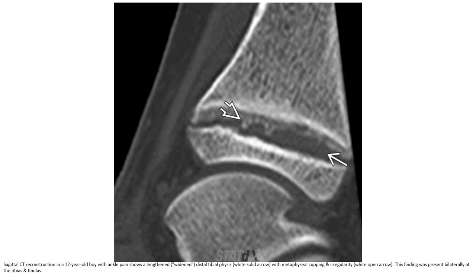Sagittal CT reconstruction in a 12-year-old boy with ankle pain shows lengthened distal tibial physis with metaphyseal cupping and irregularity. This finding was also present at the tibial-fibular level.